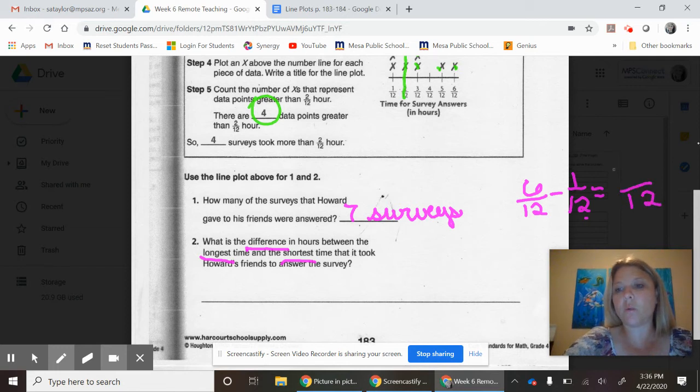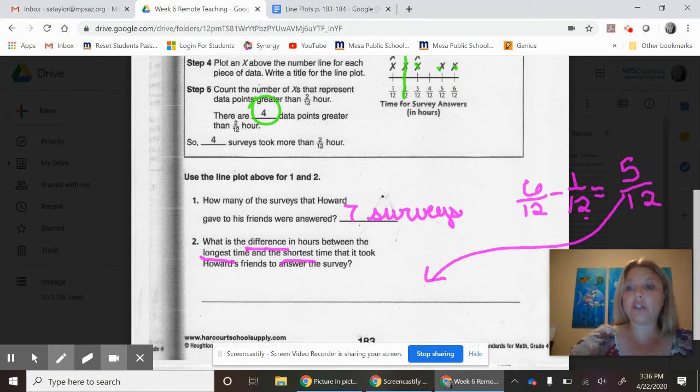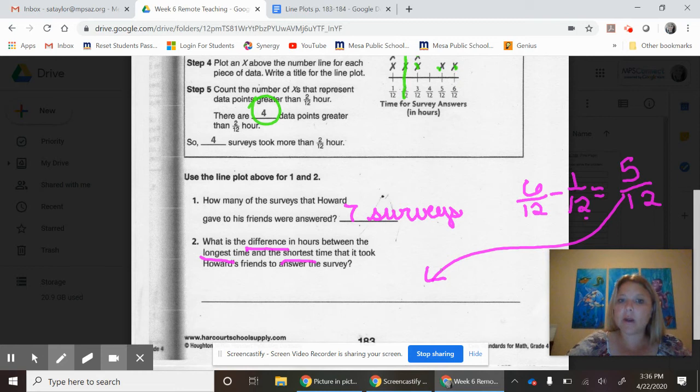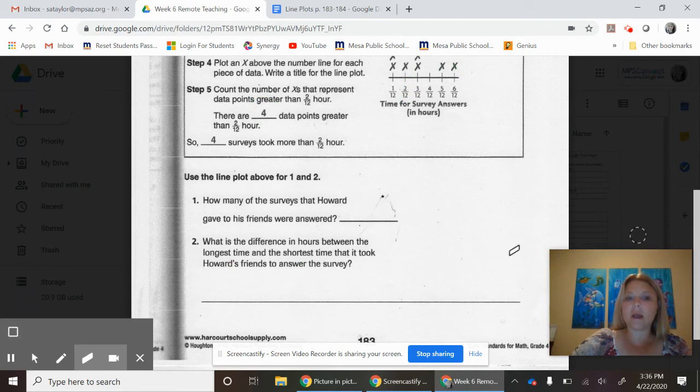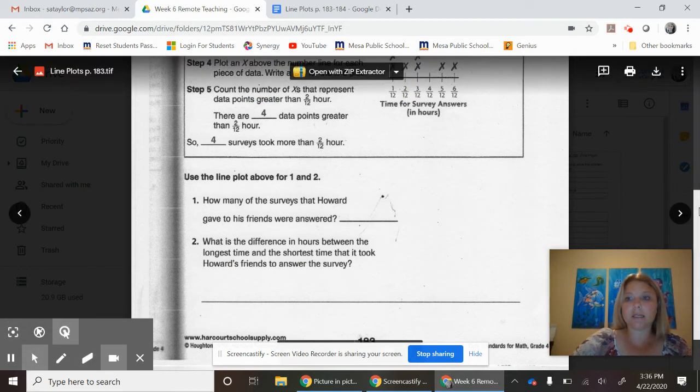You are taking your largest amount, which is six twelfths, and you are wanting to subtract it from the smallest amount, which is one twelfth. Now, as you can recall, when you are dealing with fractions, if the denominators are the same, you can subtract them. You keep the denominator the same. What's six minus one? Five. That is your answer right here. But don't forget your label - Howard's friends, they want to know the difference in hours. So five twelfths is the difference, and that's what you would write for number two.